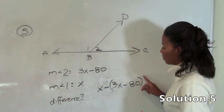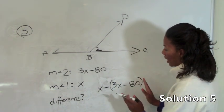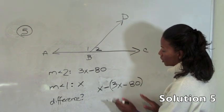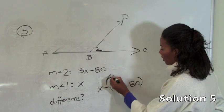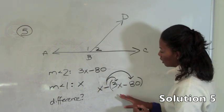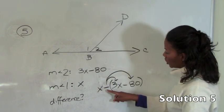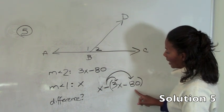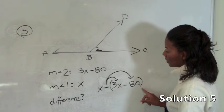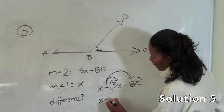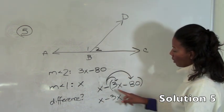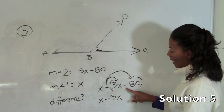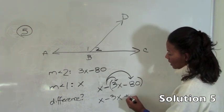We are actually going to have to distribute this negative to everything in the parenthesis thereby changing the sign on this 80. If we didn't have it in parenthesis we would simply get x minus 3x and then minus this 80. However it is minus minus 80 which is plus 80.